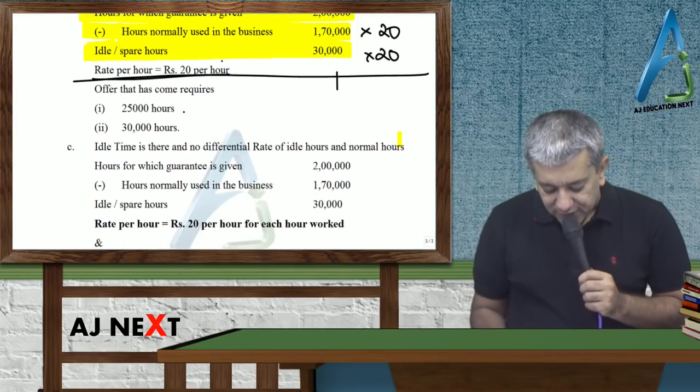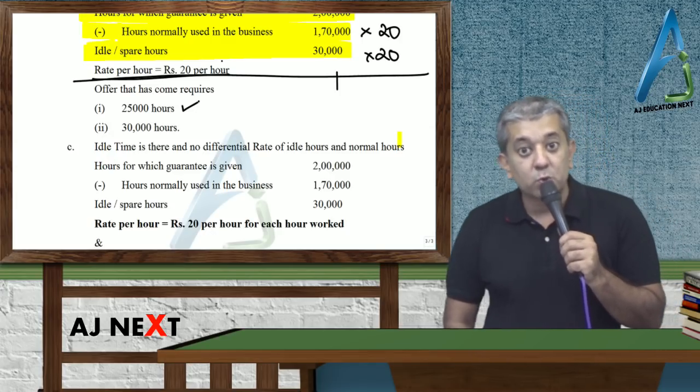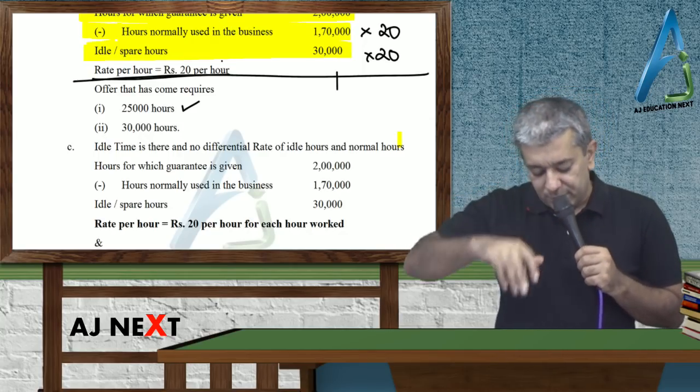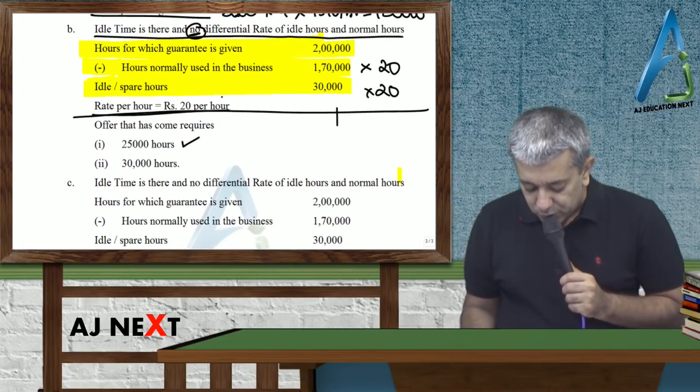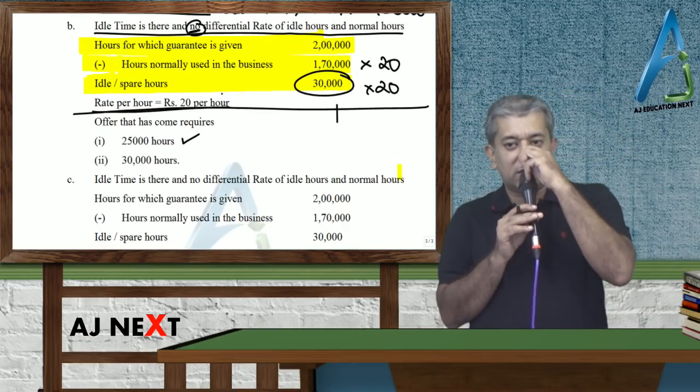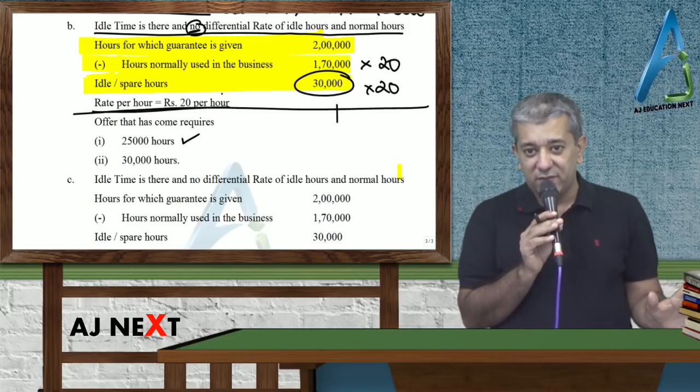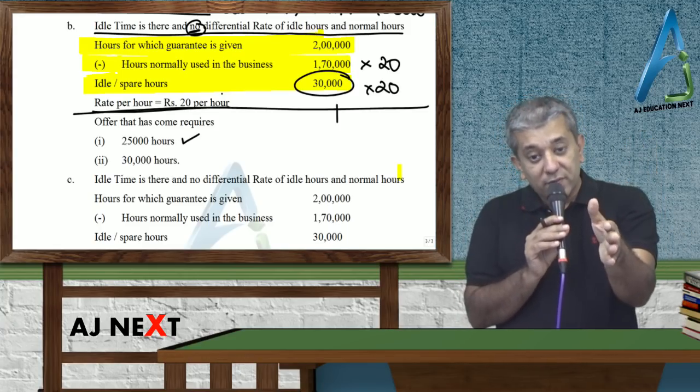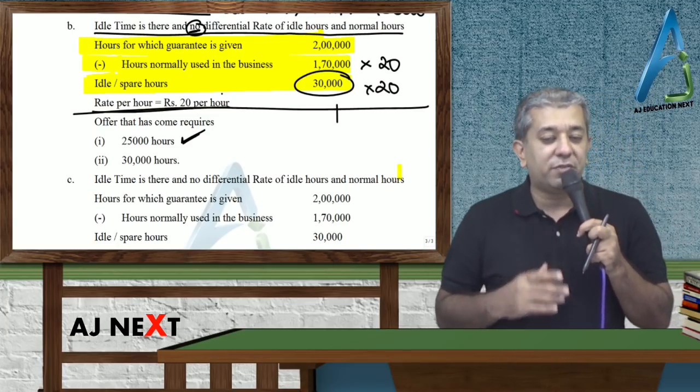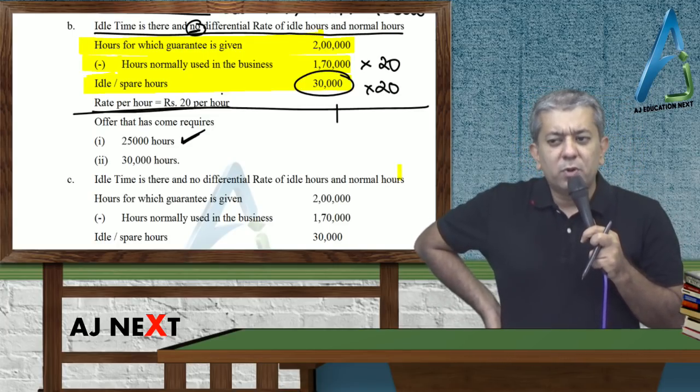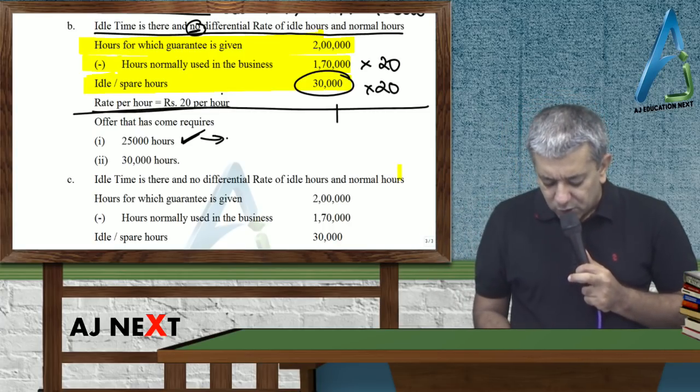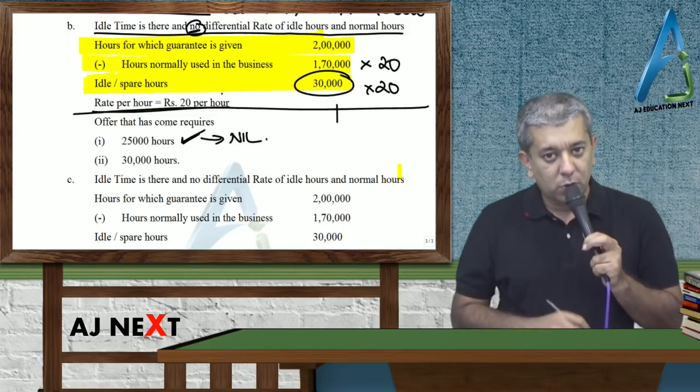All this was going on. Suddenly one day an offer came - 25,000 hours are needed for this offer. I never expected this offer would come, but it came to you. Now tell me, how many spare hours do you have? 30. Workers were going to sit idle for 30,000 hours. We were going to pay them. Now the offer has come, and the offer needs only how many hours? 25,000. Tell me, do you have 25,000 spare hours? Yes. So what will be your relevant cost? Zero.